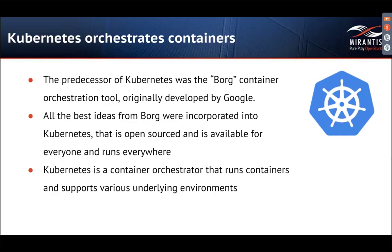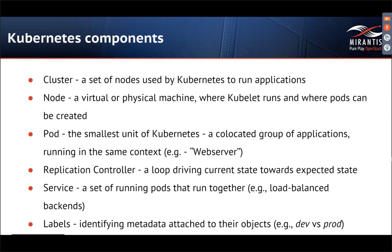Kubernetes, as a complex management system, consists of a number of core components. Kubernetes manages containers as a single unit of runtime. The possibly biggest object in a Kubernetes environment is a cluster — a set of nodes used by Kubernetes to run applications. A node is a virtual or physical machine where you can see pods with provisioned containers. Previously, nodes were named minion nodes. The services on a node include Docker, kubelet, and network proxy.